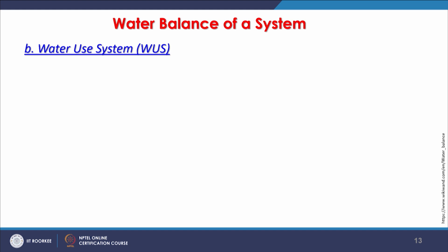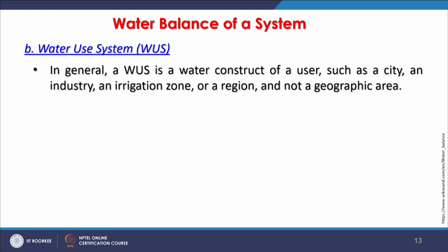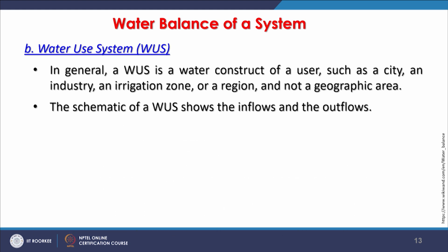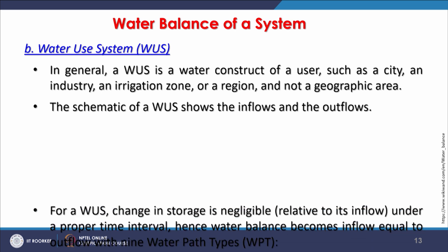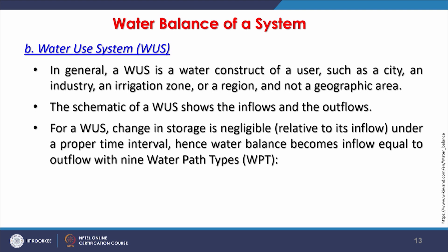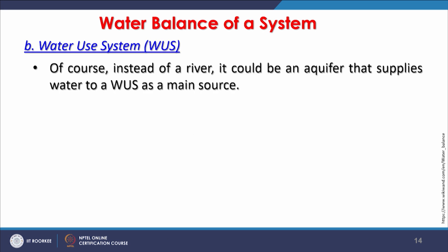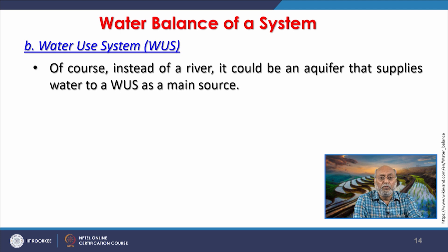Another system is the water use system (WUS). In general, a WUS is a water construct of a user such as a city, an industry, an irrigation zone, or a region — not necessarily a geographic area. In a WUS the change in storage is very little relative to its inflow, and under a proper time interval the water balance becomes inflow equal to outflow — a perfect situation, though rare in practice. It could also be an aquifer that supplies water to a WUS as the main source.